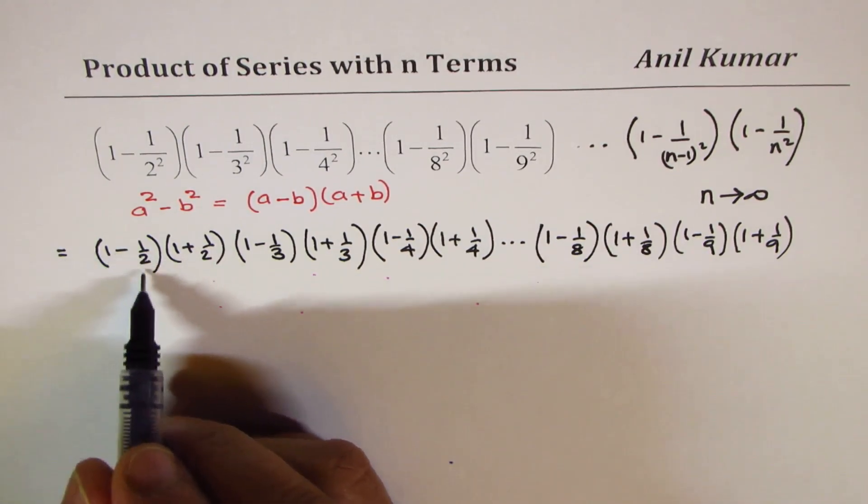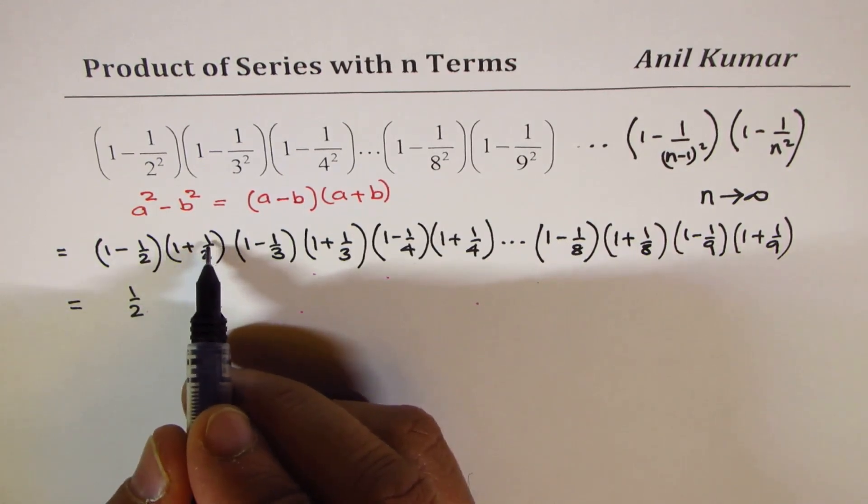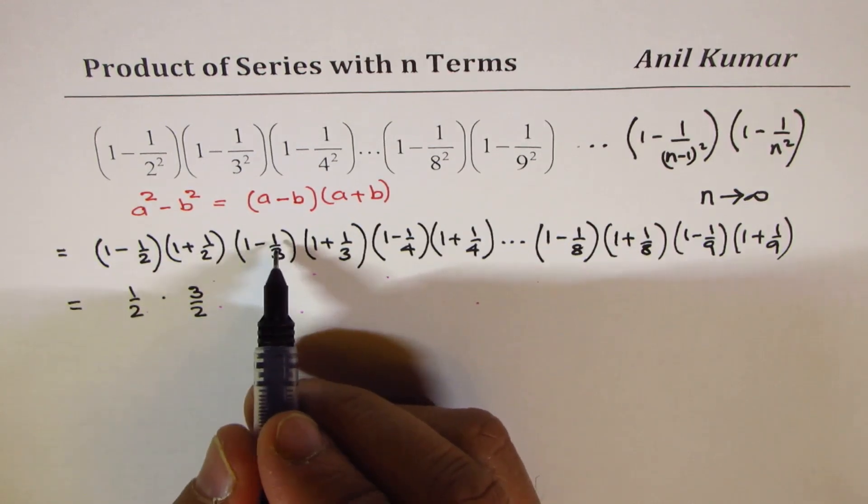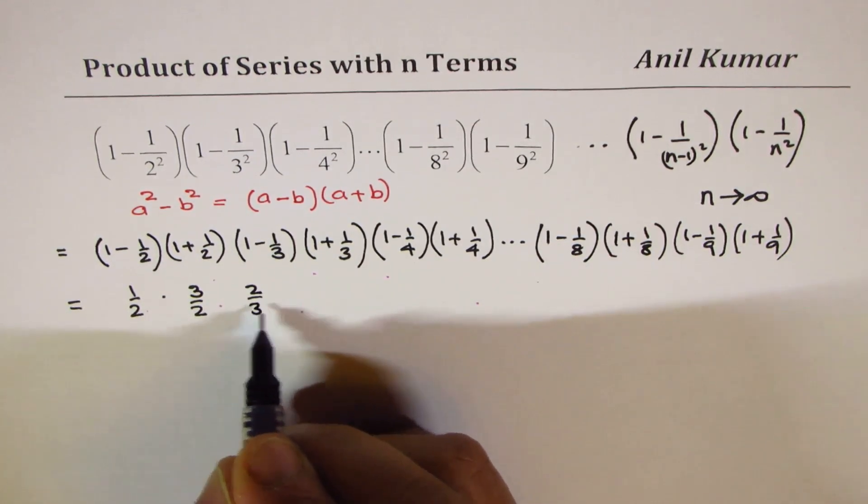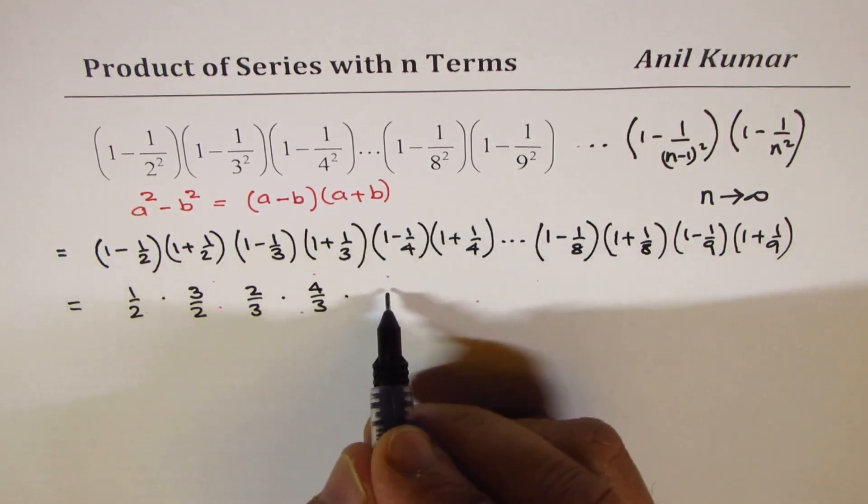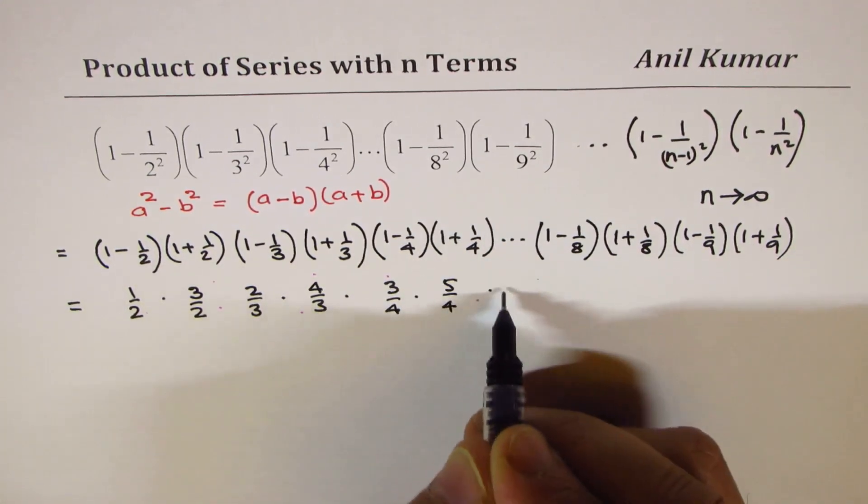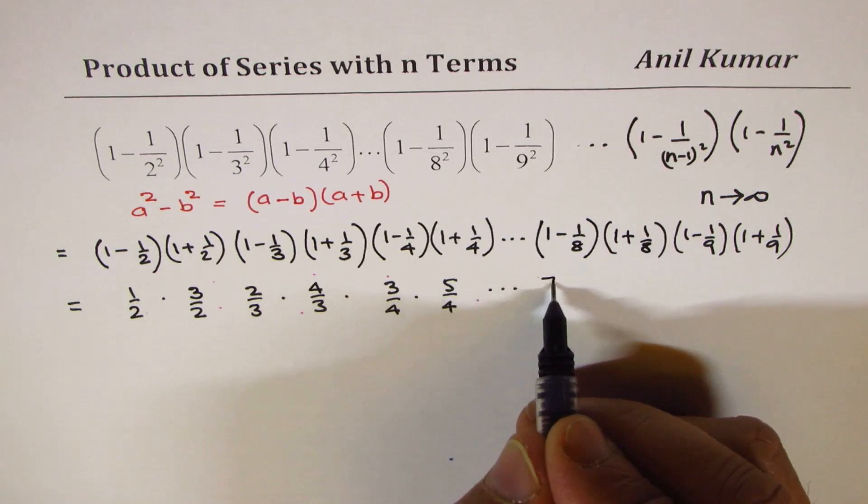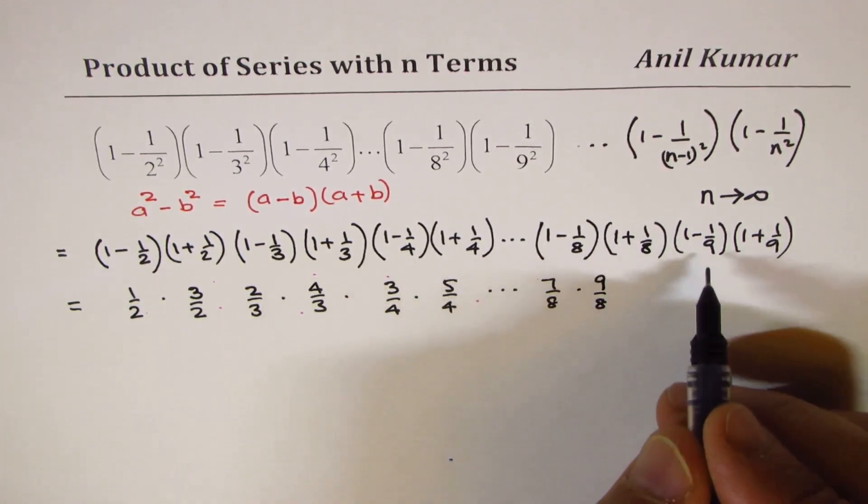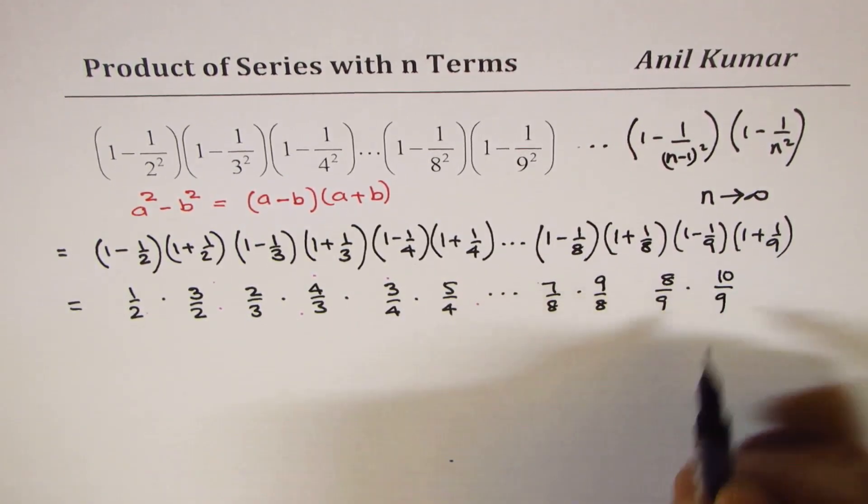Now, what is 1 minus half? 1 minus half is half. Now, here you get 2 plus 1, 3 over 2, so we get 3 over 2. Here you get 3 minus 1, which is 2 over 3. And then we get 3 plus 1 as 4 over 3. 4 minus 1 is 3, so we get 3 over 4. 4 plus 1 is 5, 5 over 4, and so on. And here we get 8 minus 1 is 7, 7 over 8. So, 1 less and 1 more, 9 over 8. 1 less, 8 over 9. And 1 more, 10 over 9. Do you see that?